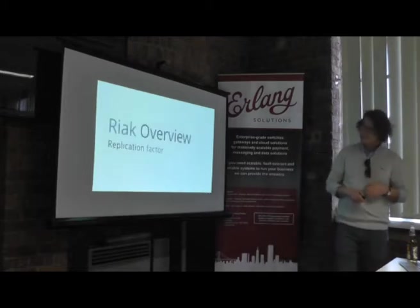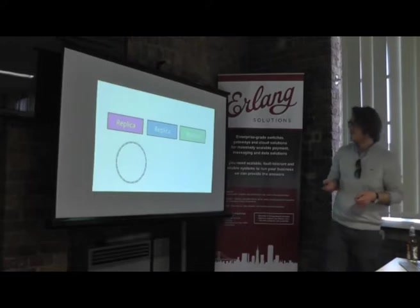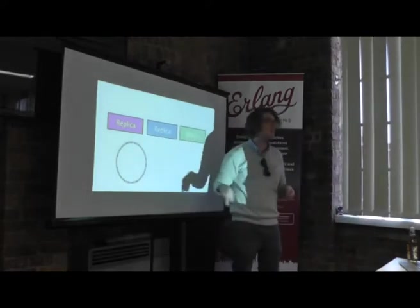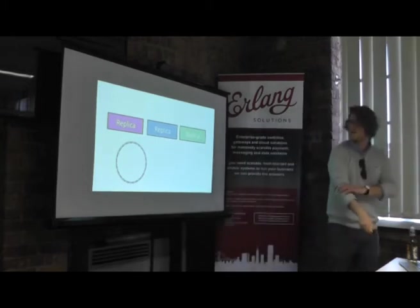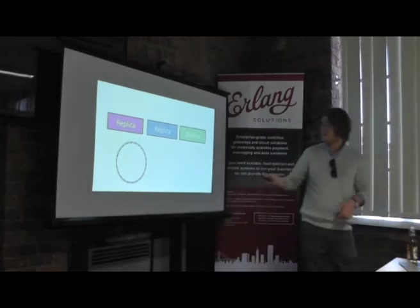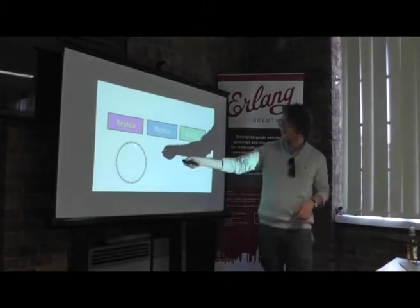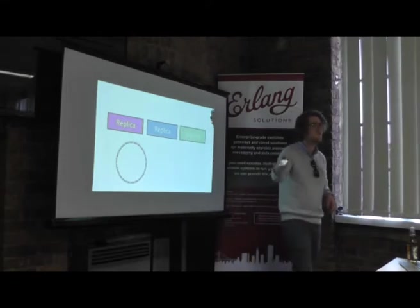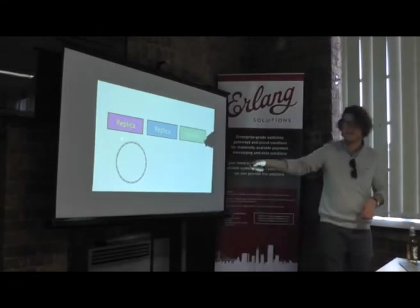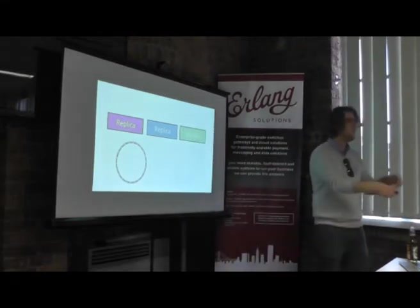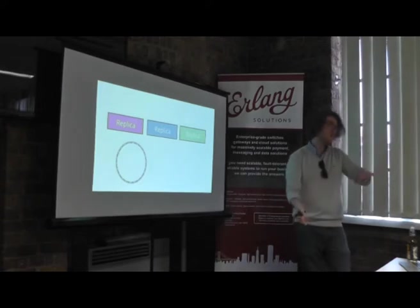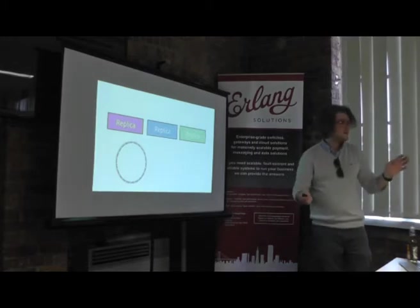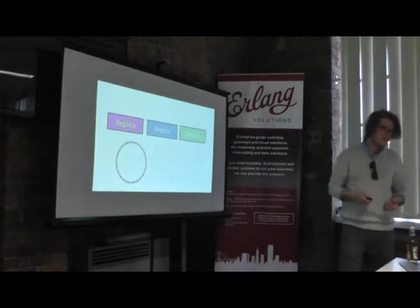With the replication factor we have a series of replicas and we want to place those on positions of the ring so that replicas of the same data item are stored on different nodes. We can reason about where those replicas are located by walking the ring clockwise to find the next two replica locations. This gives us a deterministic way to find any piece of data's location on the ring, find its neighboring replicas, and return those.